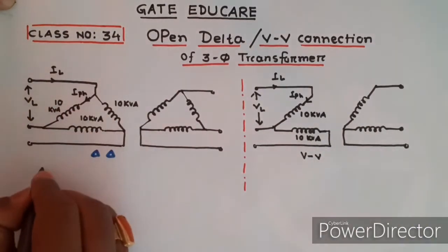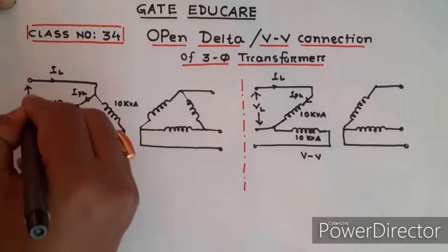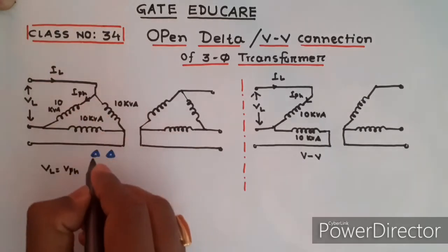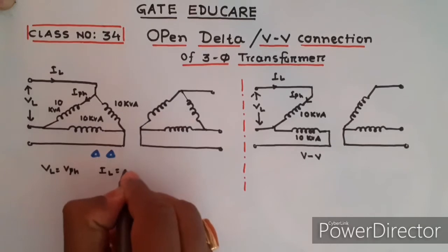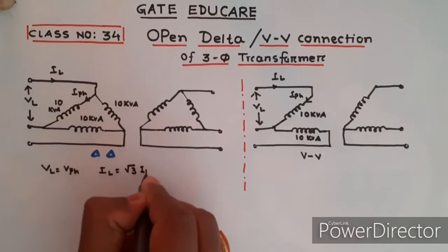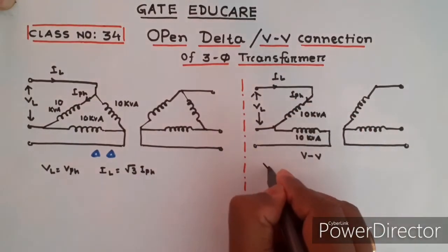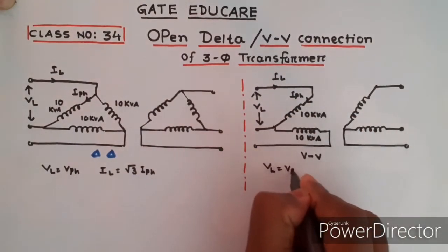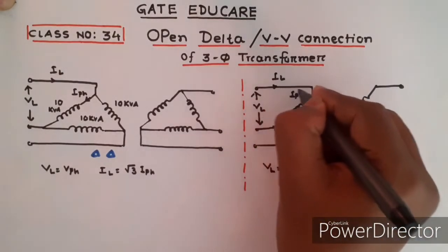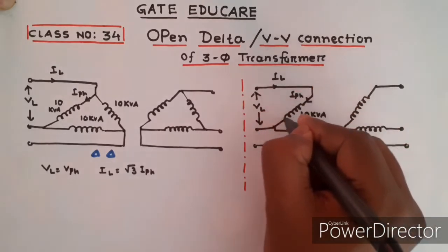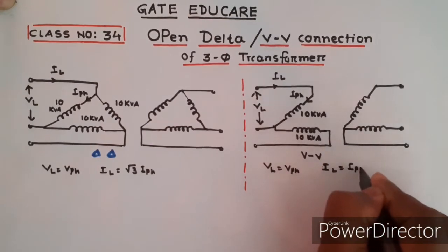In the V-V connection, VL equals V-phase — line voltage and phase voltage are the same. However, IL equals root 3 times I-phase. Compare this to the delta-delta connection where VL equals V-phase, but IL and I-phase are equal. Since IL comes in and I-phase goes out in the V-V connection, here IL equals I-phase.